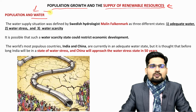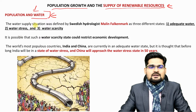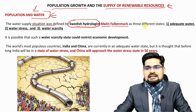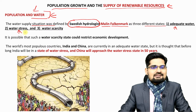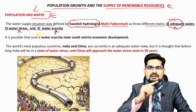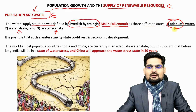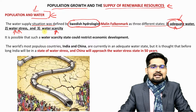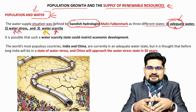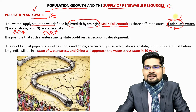Population and water is going to be the most prime concern because water is a lifeline to people. The water supply situation was defined by Swedish hydrologist Malin Fleckenmark as three different states: adequate water state, water stress, and water scarcity. The world is moving from adequacy towards scarcity — that is where the transition comes with population. As population grows, we are going from adequate water stage to water stress and to water scarcity. Already many African countries are in the water scarcity stage, while some are in water stress.